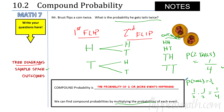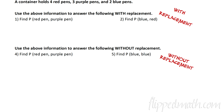The best way to get into this is to do a lot of practice. Here's a key clue: look for the words 'with replacement' and 'without replacement.' With replacement means you take an item out and put it back. Without replacement means you keep it out. A container holds four red pens, three purple pens, and two blue pens.